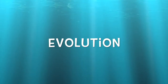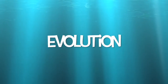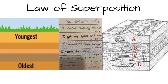Welcome back to our evolution unit. So far we've learned about three big ideas. One, geologic time — the earth is really really old and scientists divide the time into different eras. Two, the law of superposition — the idea that the lower you dig the older rocks are, and so the lower you find a fossil the older it is.